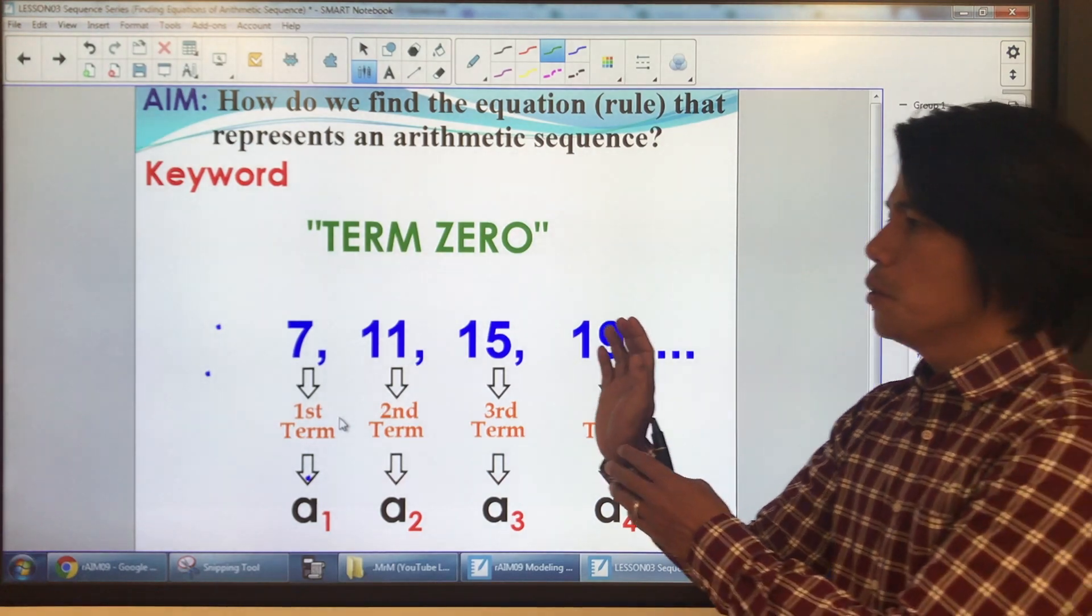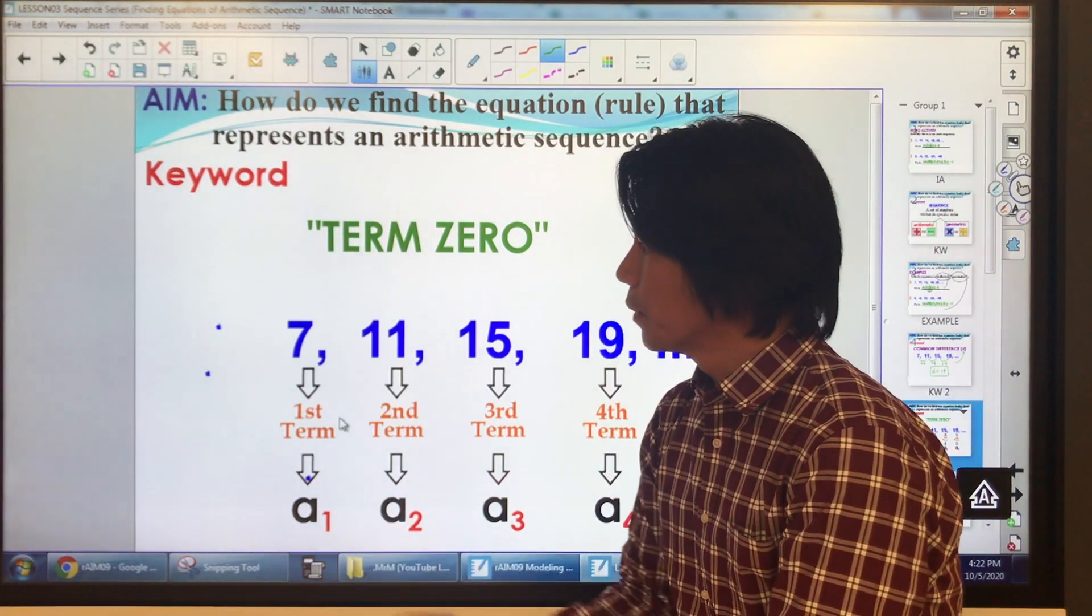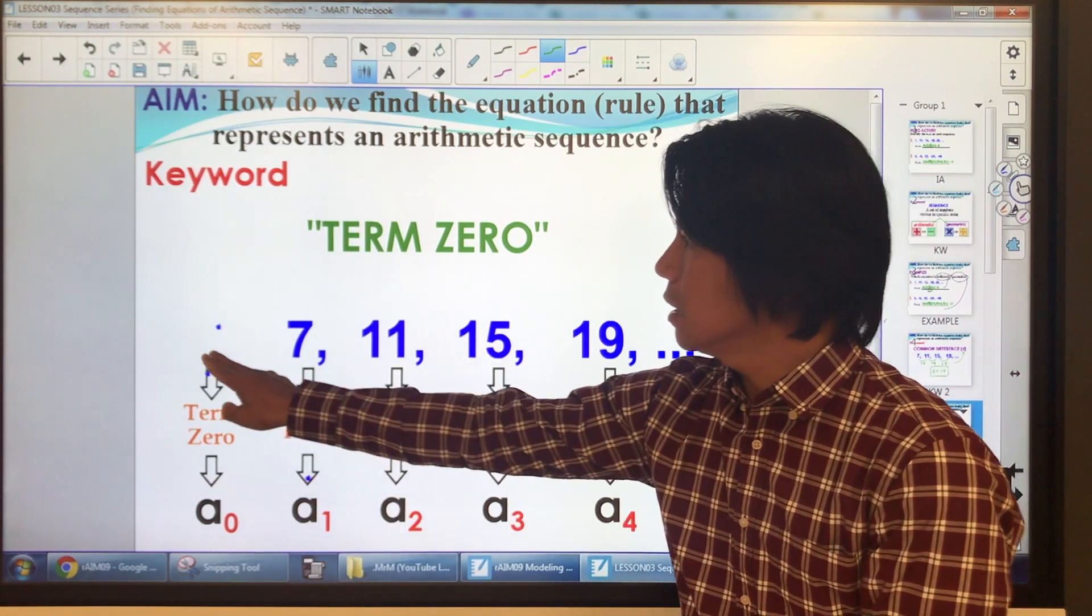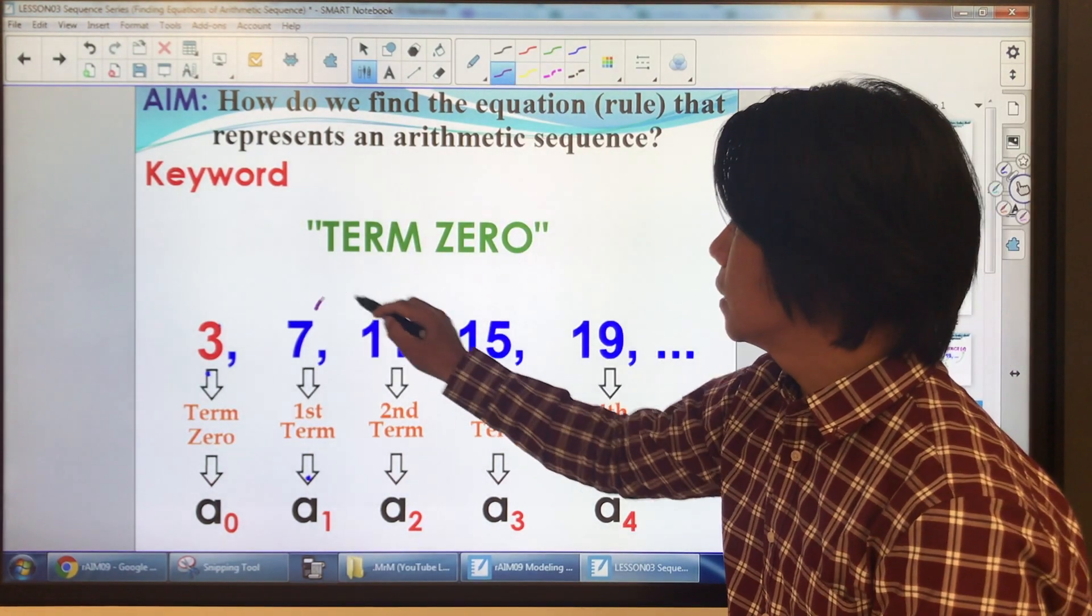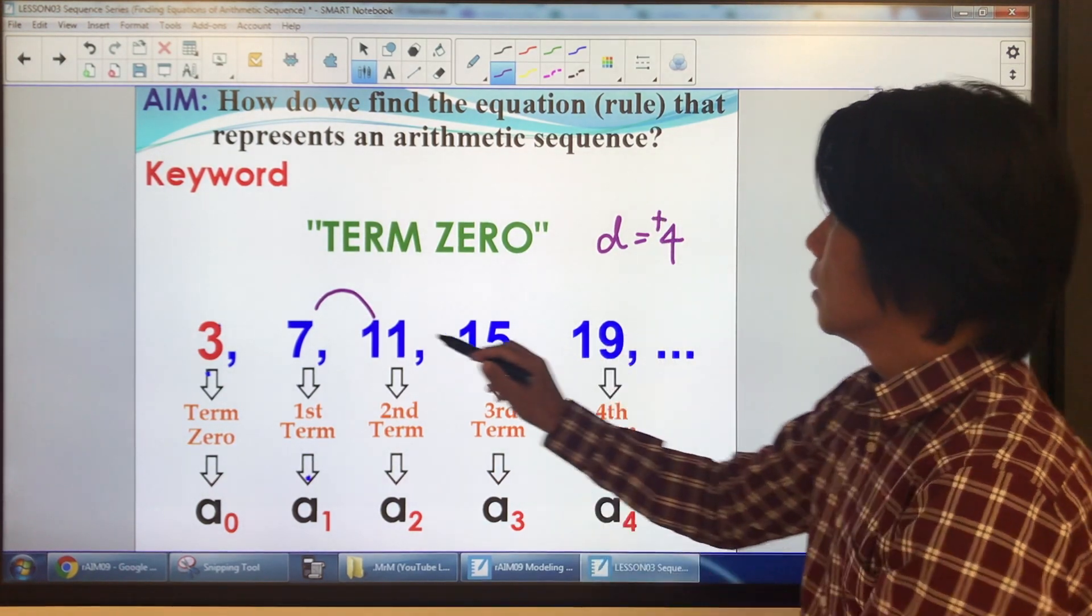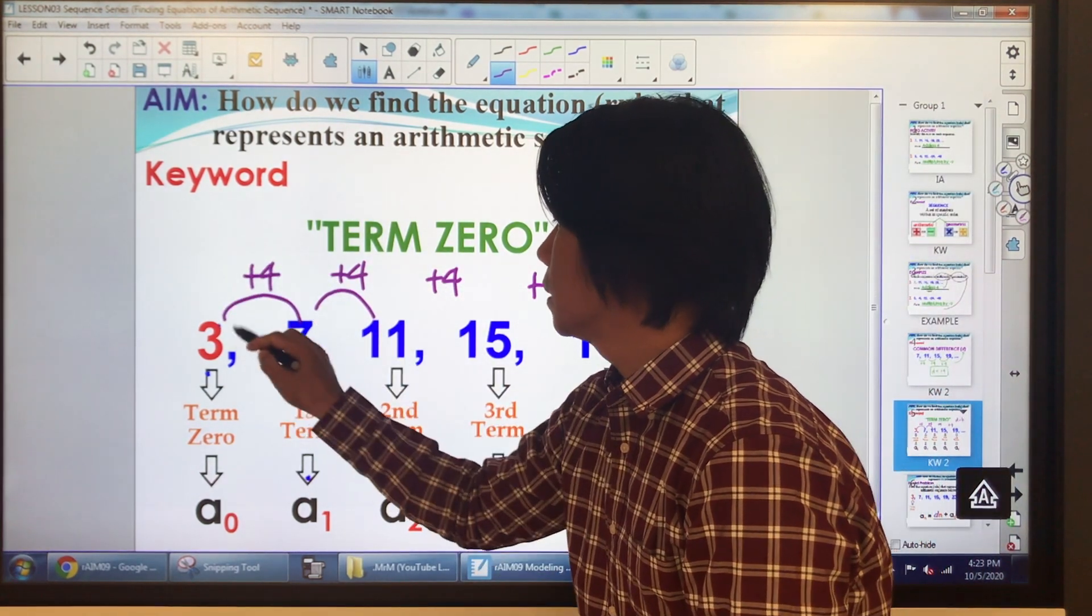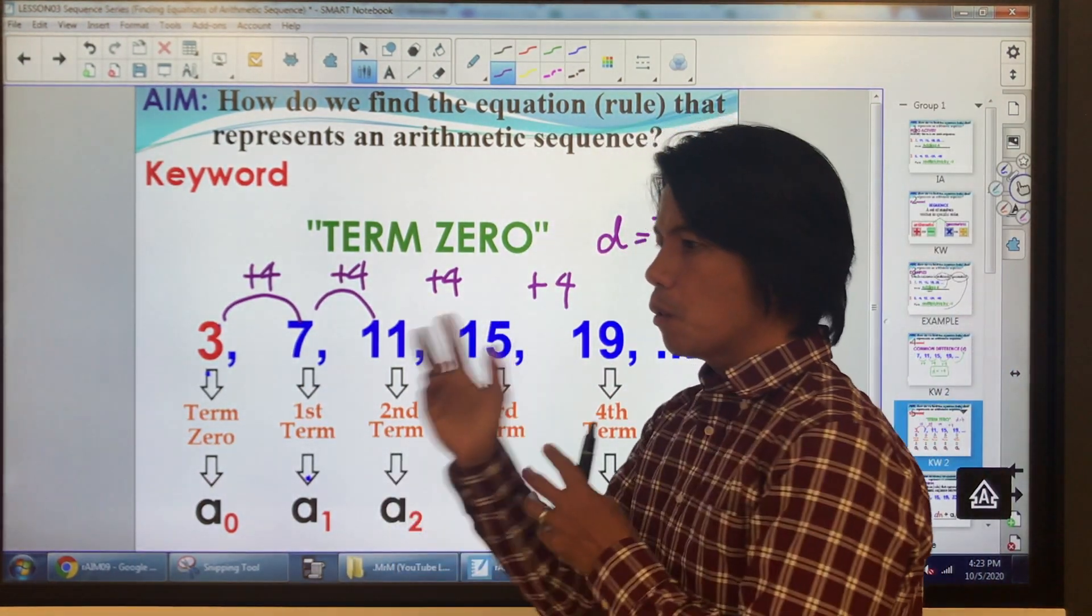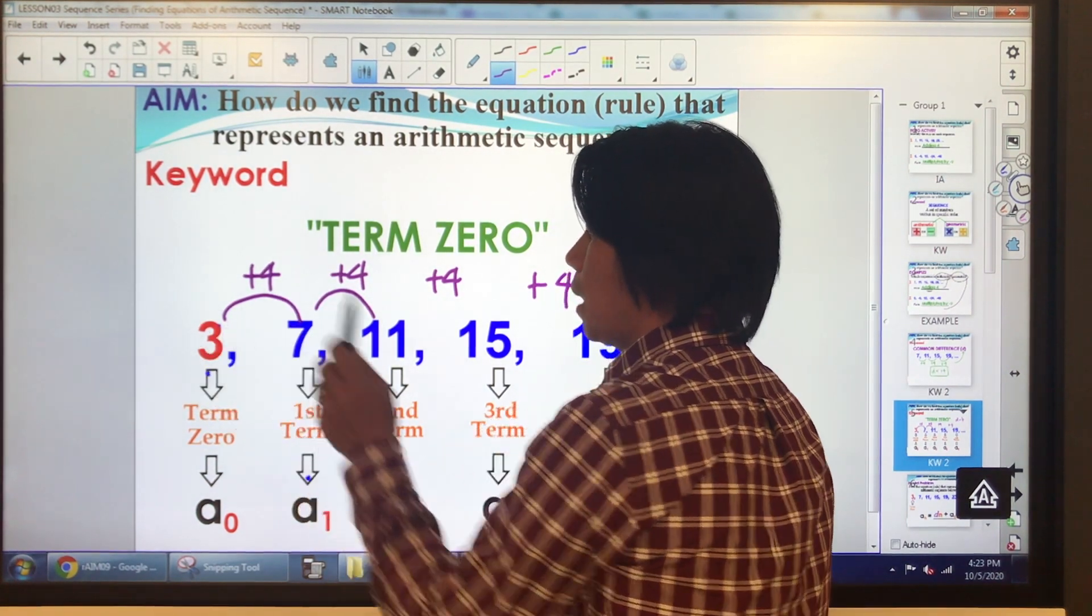Now, when we say term 0, you work backward. You go to the term before the first term, which is your term 0, or A sub 0. So, in this case, term 0 is 3. How do we verify that? Remember, the common difference of this sequence is positive 4. So, we're adding 4, right? So, what if I add 4 for the term 0? We get 7, and that is 3. Or, in other words, what you can do when you work backwards, you can subtract 4 from 7. 7 minus 4 is positive 3.